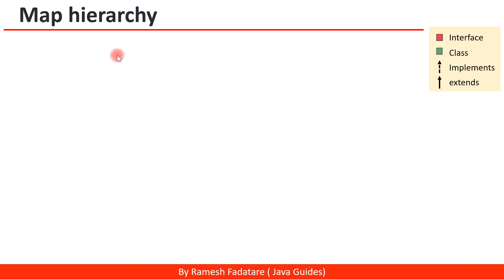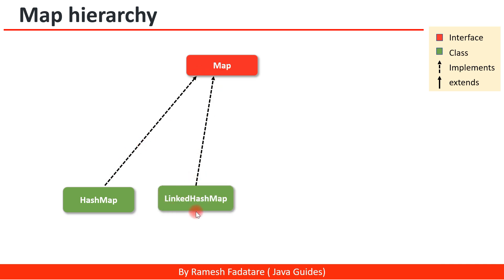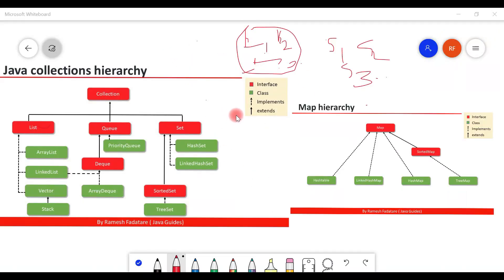The Map hierarchy is separate. The Map interface stores key-value pairs, and commonly used implementation classes include HashMap, LinkedHashMap, and HashTable — which is a legacy class. SortedMap sorts map keys and values, and TreeMap implements SortedMap. Now that we've theoretically understood the collections framework hierarchy, let's see how it is implemented in actual core Java packages.